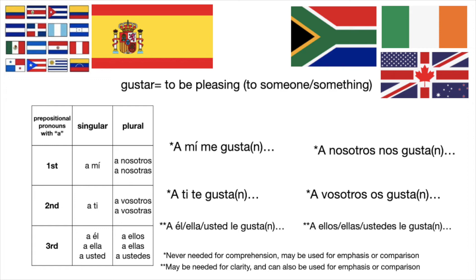For 'you singular informal,' I would say a ti — a ti te gustan los libros. 'We' is a nosotros, or a nosotras if the group is all women. And 'you guys,' if you're in Spain, is a vosotros, or a vosotras if the group is all women.